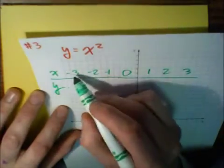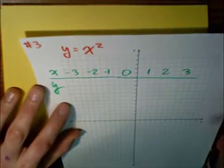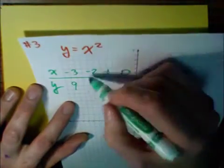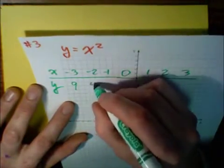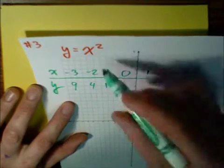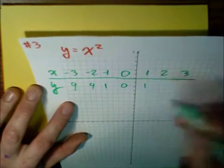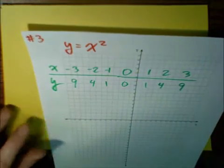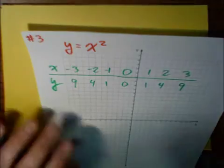So, if I have x equals negative 3, negative 3 quantity squared is 9, a positive 9. Negative 2 quantity squared is a positive 4. Negative 1 squared is 1, 0 squared is 0, 1 squared is 1, 2 squared is 4, and 3 squared is 9. And this will give us just a real quick example.